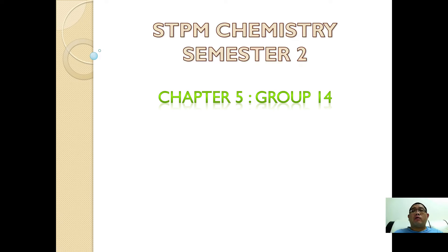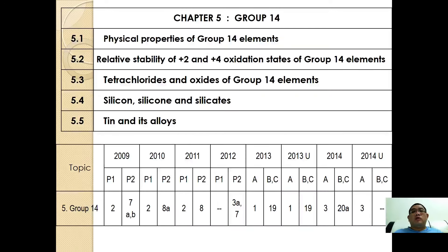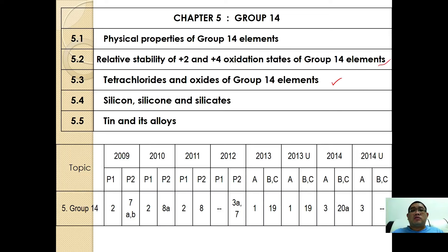Let's have a look at the content we are going to learn for group 14. In this chapter, we are going to look at the physical properties of group 14, the relative stability of the plus 2 and plus 4 oxidation states, and using that, we are going to study the tetrachloride oxides of group 14 elements. We are also going to have a look at silicon, silicones and silicates.